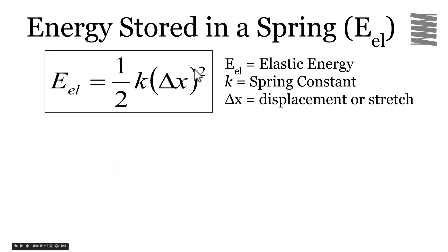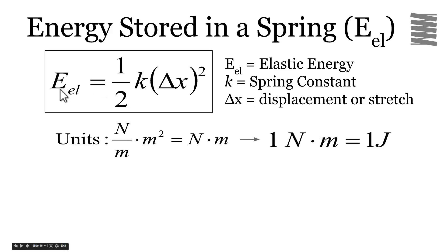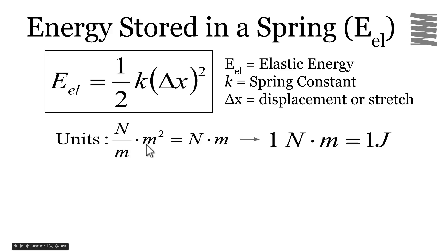So if you're stretching or compressing a spring from its relaxed position, the energy stored equals one-half times k times the stretch squared. EEL stands for elastic energy stored in the spring. K is the spring constant in newtons per meter, and Δx is the displacement or stretch. Checking units: k has units of newtons per meter, Δx squared has units of meters squared, so we get newtons per meter times meters squared. The meters in the denominator cancel one meter in the numerator, leaving newton-meters, which is a joule.